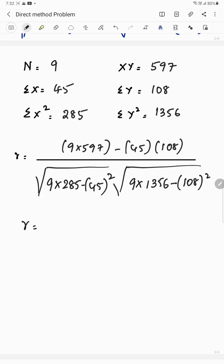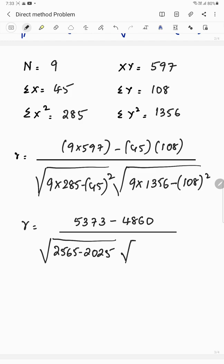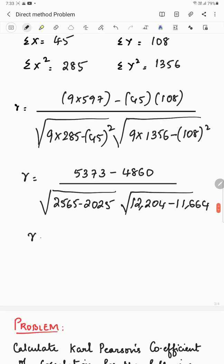You can sum this up to 5373 minus 4860 divided by under root 2565 minus 2025. Then comes 12204 minus 11664. Then you have r is equal to 513 divided by under root 540 into under root 540.